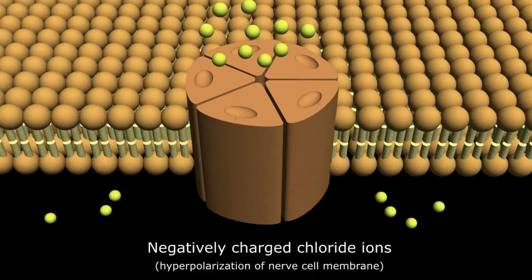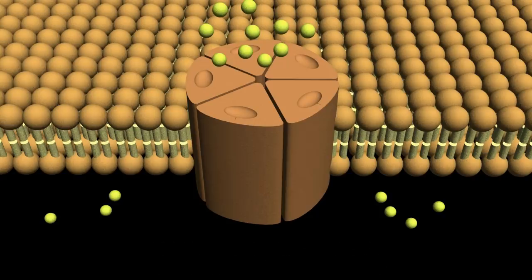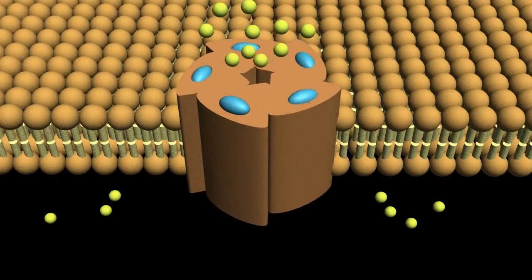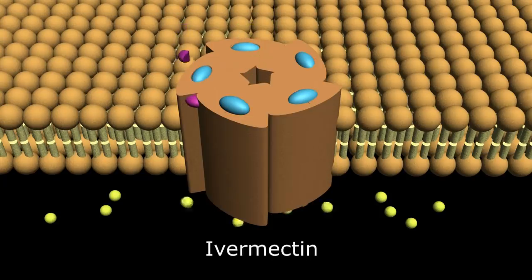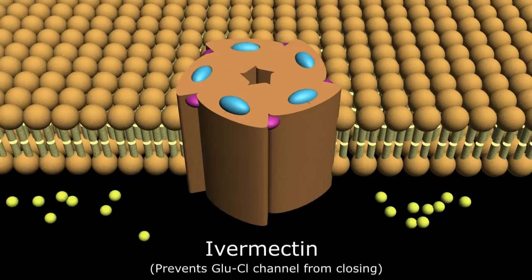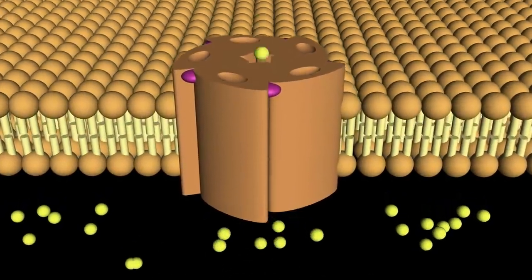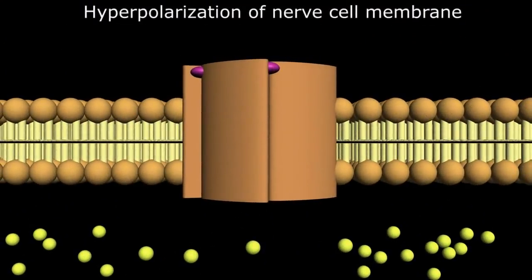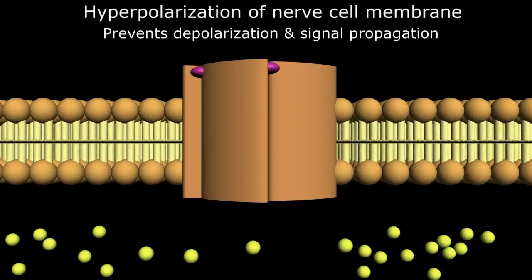These channels seem to serve multiple roles in helminths, facilitating locomotion, feeding, and mediating sensory inputs into behavior. Ivermectin insinuates itself between subunits of the chloride channel, preventing it from closing, allowing free flow of chloride ions into the nerve cell and maintaining hyperpolarization of the nerve cell membrane, thereby preventing nerve signal propagation. The accompanying paralysis results in parasitic death.